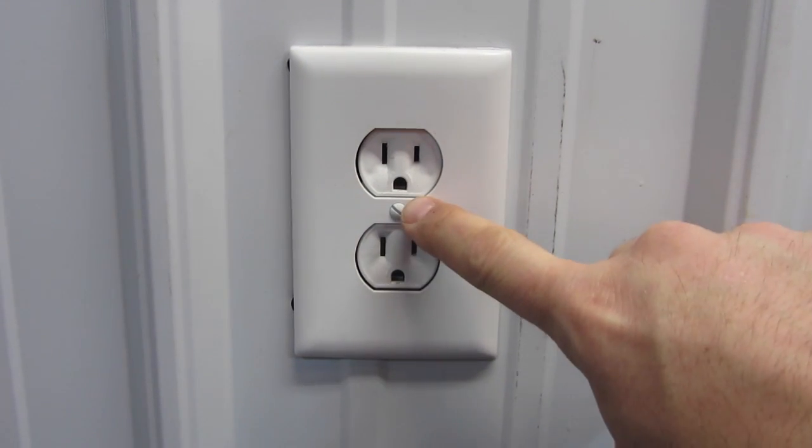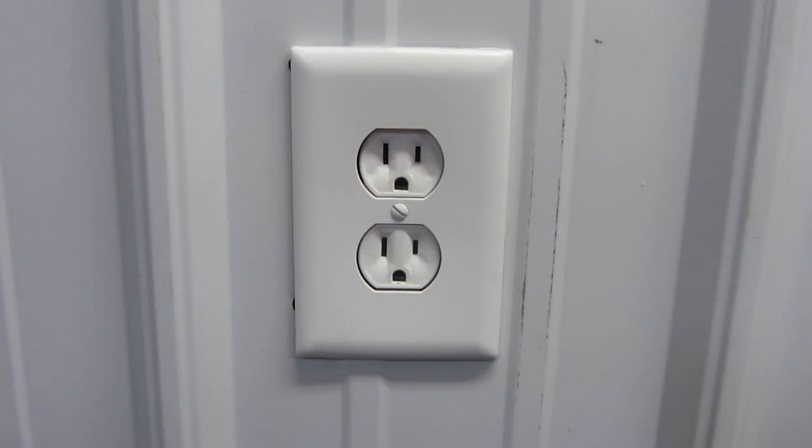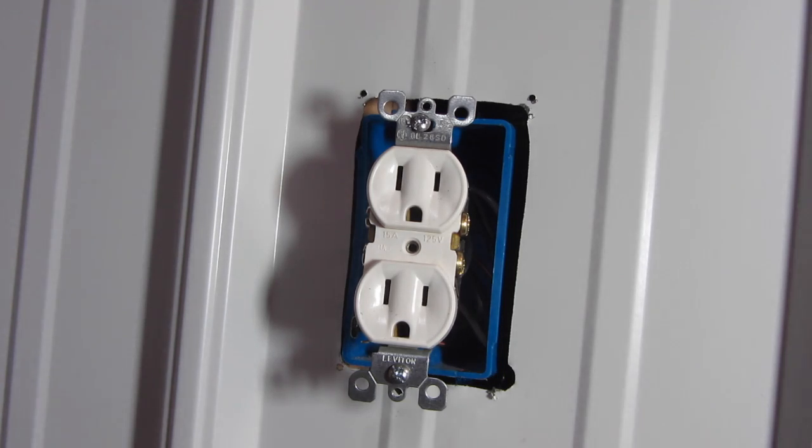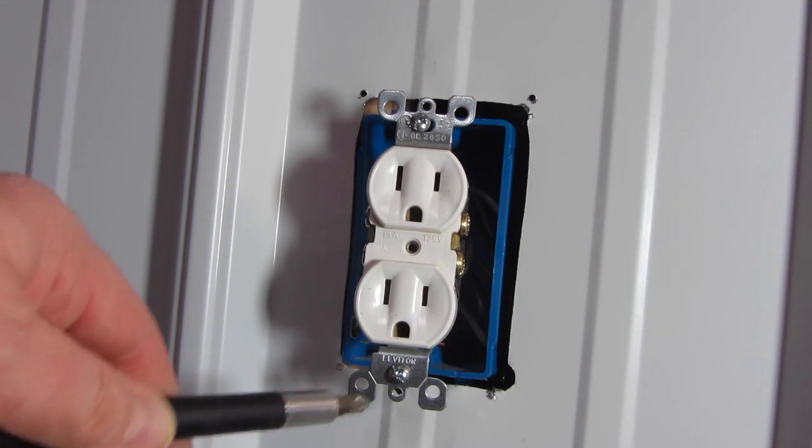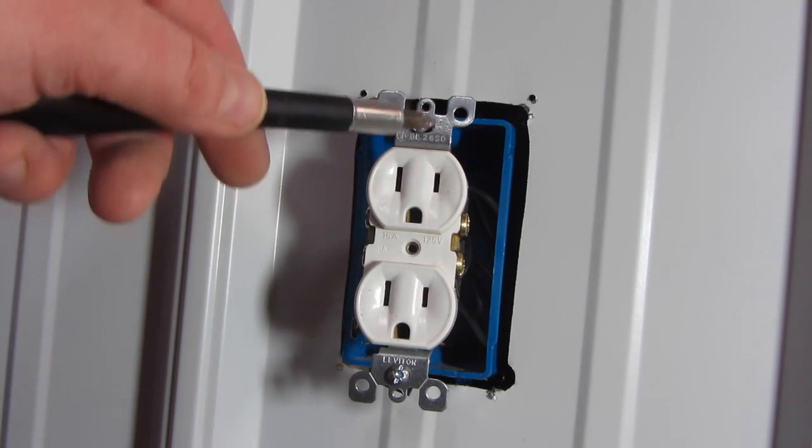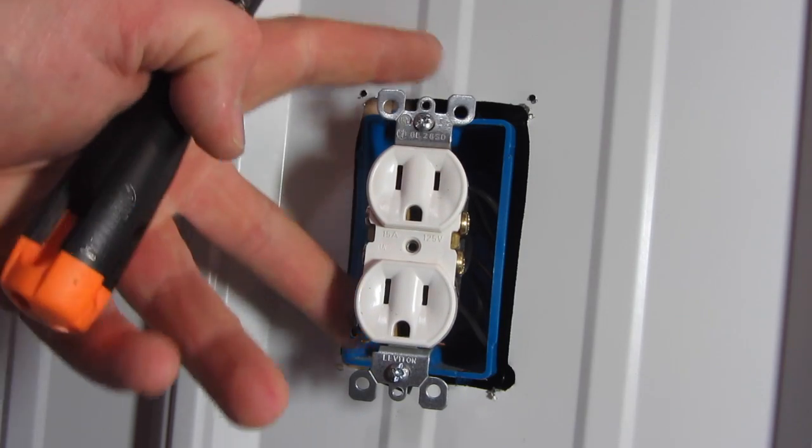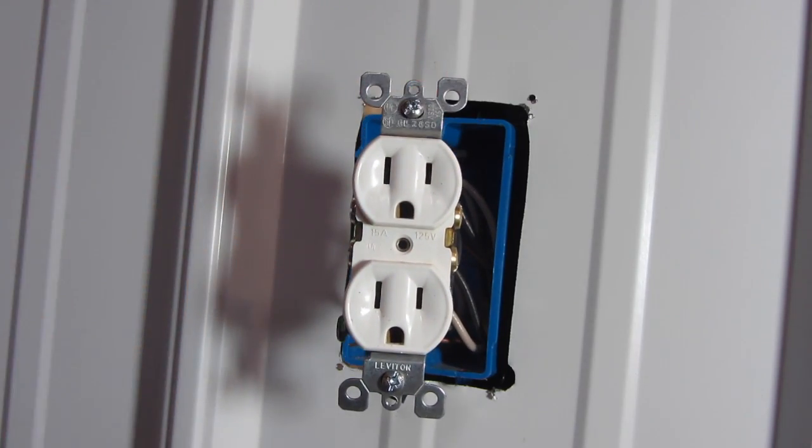Remove this plate by removing this screw. Now, take a screwdriver and remove these two screws until the outlet comes out of the box like that.